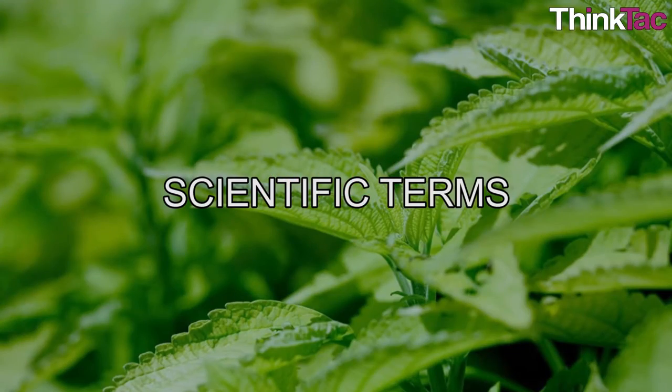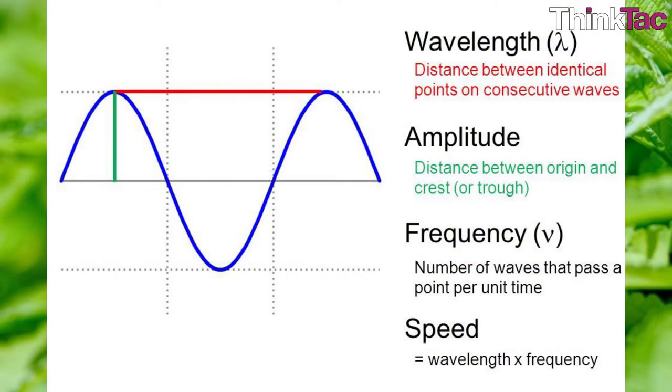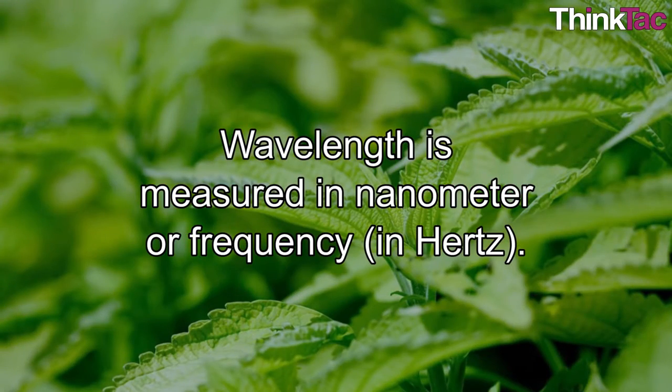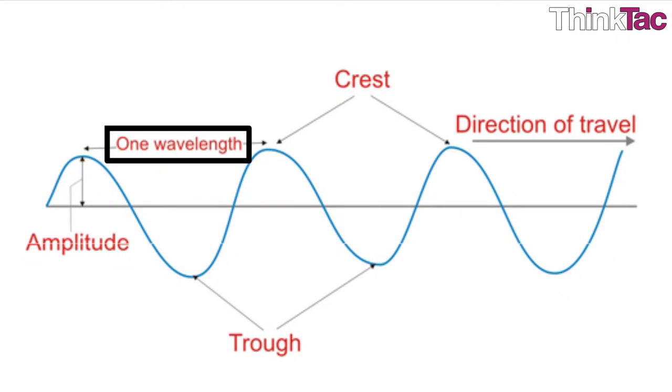Some scientific terms. The wavelength of light. One of the characteristics of light is its wavelength, typically measured in nanometers for visible light, or frequency which is measured in hertz. One wavelength equals a distance between two successive wave crests or troughs.